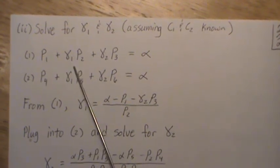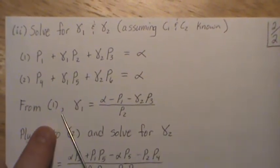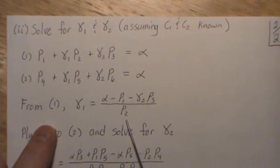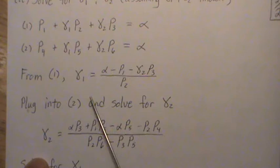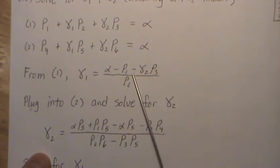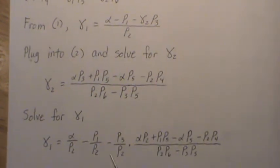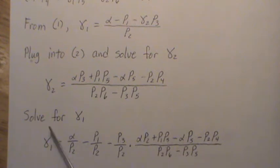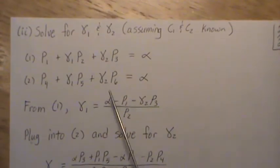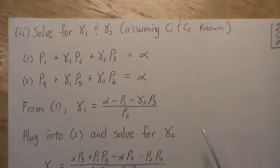Well, given this equation, we can solve for these two unknowns. So from equation 1, we can solve for gamma 1, plug it into equation 2 and solve for gamma 2, and then plug that back into this equation and solve for gamma 1, and we do. And so these are the values, gamma 1 and gamma 2, that force these equations to equal alpha.